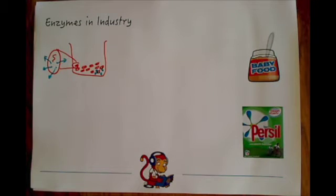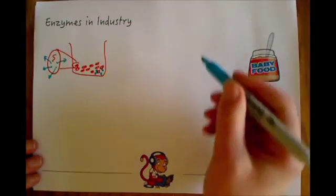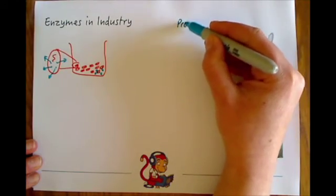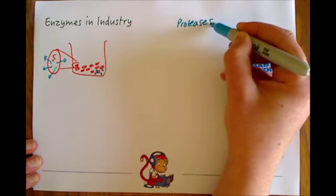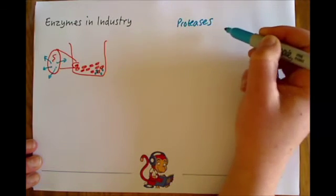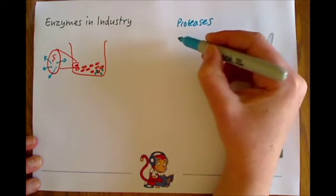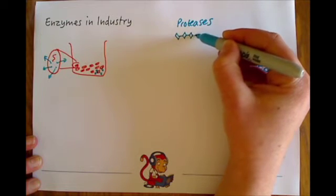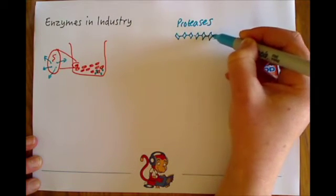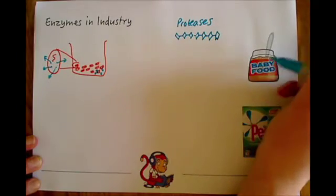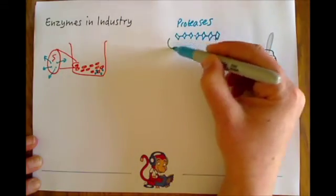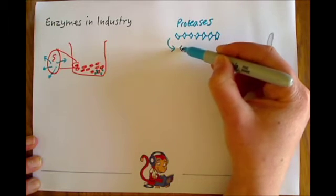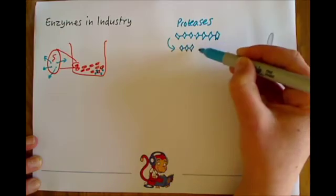We'll go through each example in turn. First of all, in baby food there are enzymes called proteases. We've come across those before when looking at digestion, and if you remember, proteases break down proteins. In this case, the proteases take long chain proteins and break those long chains down into shorter chains so it's easier for the baby to digest.